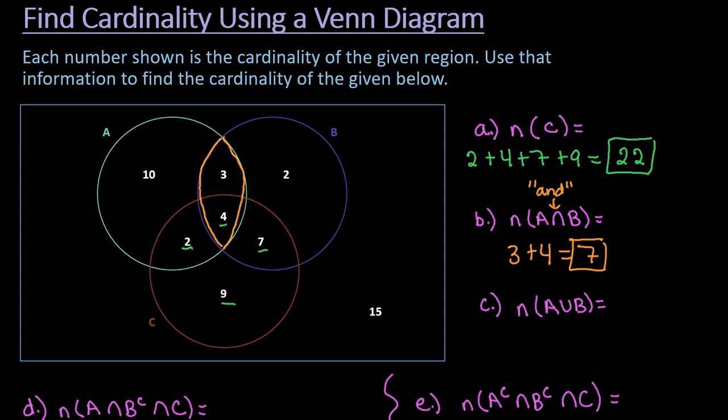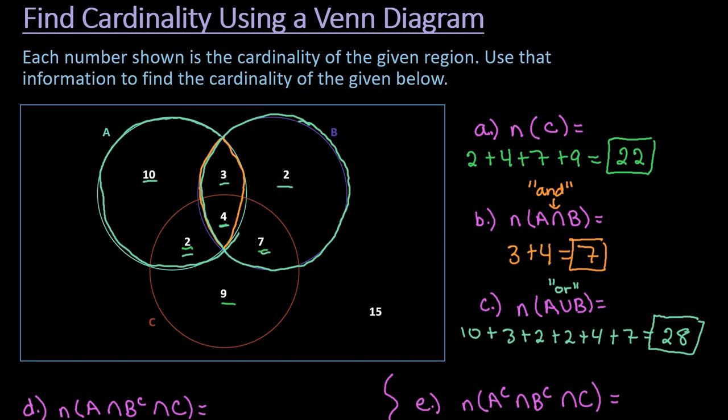The next question is different because this time it's asking us for the number in A or B. So that means it could be in either A or B. It doesn't have to be in both. With AND it has to be in both at the same time. With OR it only has to be somewhere inside of this circle here so Circle A or somewhere inside of Circle B. So for this one we're going to take every number that shows up inside of there so the 10, 3, 2, 2, 4, and 7 and we're going to add those together. So I would have 10 plus 3, plus 2, plus 2, plus 4, plus 7. So then we would add these together. So 10 plus 3 is 13 and we would have 15, 17, 21 and we have a total of 28 that fall inside of Set A or Set B.